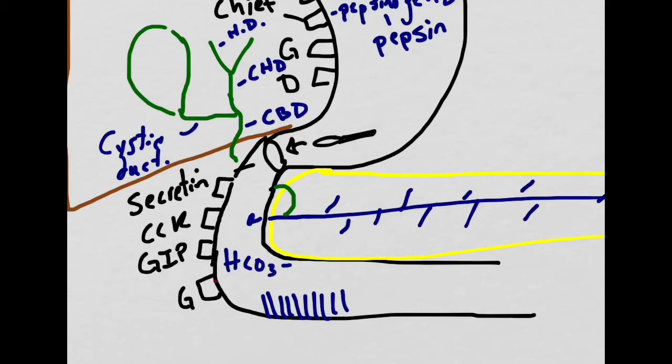When fat enters the duodenum, it's going to release CCK. CCK will do three things. The first thing it will do is relax the hepato-pancreatic sphincter. Then it will squeeze the gallbladder. Both those actions will allow bile to enter the duodenum. It will also travel through the blood to the central nervous system to decrease the hunger sensation. The increase of bile in the area will now increase the emulsification of that fat.